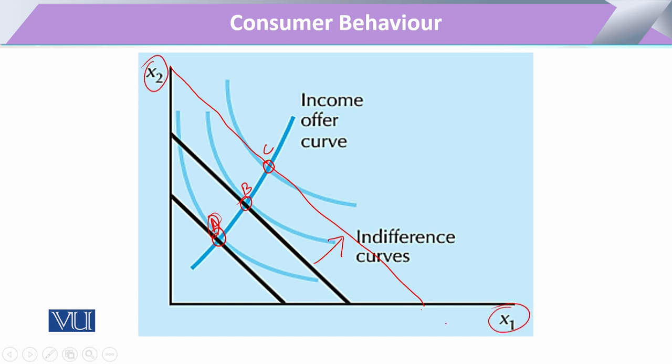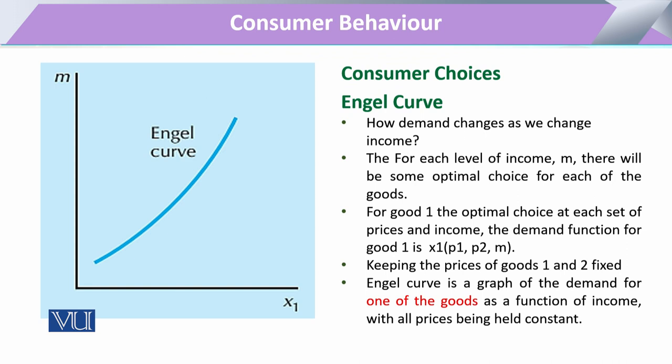In the previous diagram we showed two commodities, one on the X axis and the other on the Y axis. But when we study the behavior of one commodity with respect to income, income is placed on the vertical axis and the commodity on the X axis. The relationship of a single commodity with the change in income, when studied, gives us a graph that is called the Engel curve.